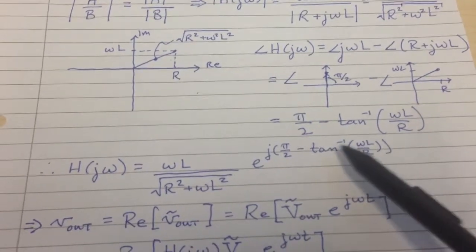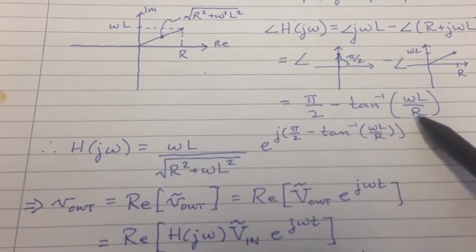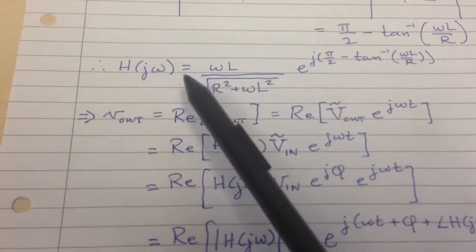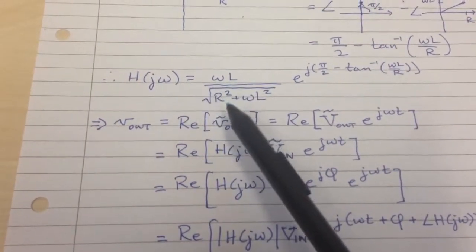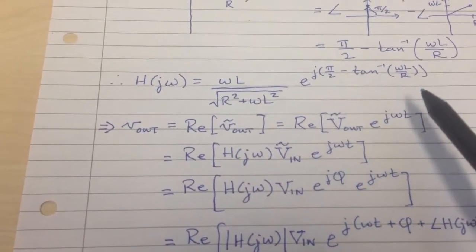So with that, you get to this π over 2 minus the arctangent. That's our angle. So now we can write our H(jω) as this amplitude times this phase term.